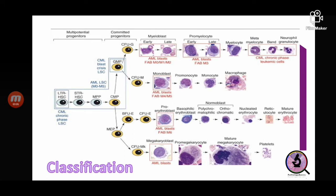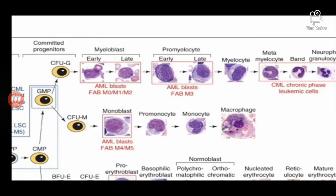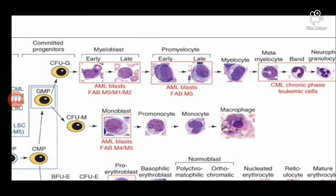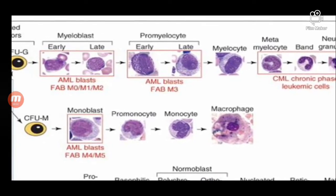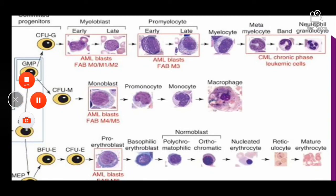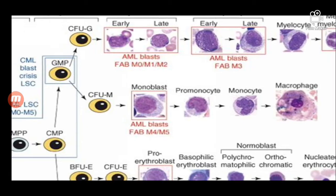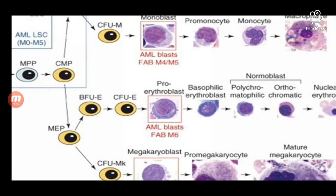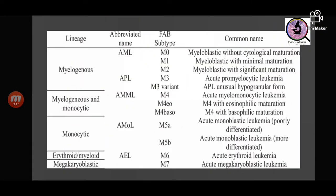AML is of various types depending on which differentiation is impeded. The FAB classification — French-American-British classification — is a morphological classification based on which blast is increased in the bone marrow. M0, M1, and M2 are undifferentiated blasts, early myeloblasts, and late myeloblasts. In AML M3 there are differentiated myeloid blasts. AML M4 and M5 include blasts which differentiate towards monocytes — that is monoblasts. AML M6 is proliferation of erythroblasts, and AML M7 is proliferation of megakaryoblasts.